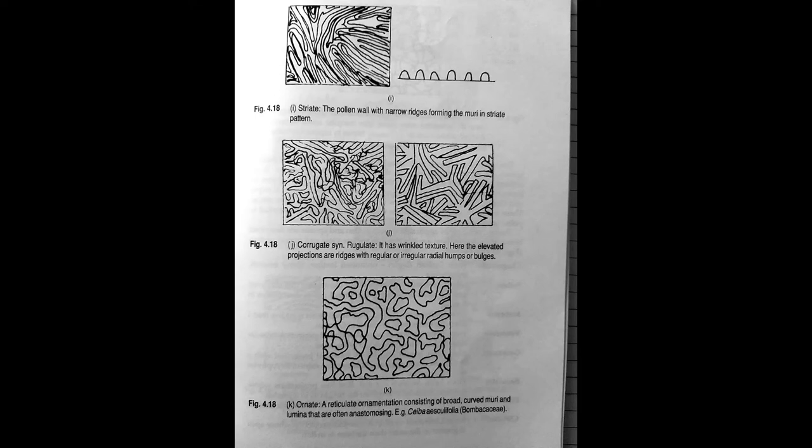Next we have ornate, a reticulate ornamentation consisting of broad curved muri and lumina that are often anastomosing. This is found in Ceiba aesculifolia of Bombacaceae.